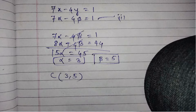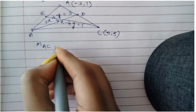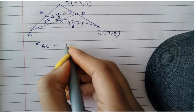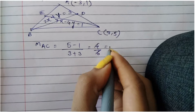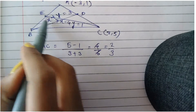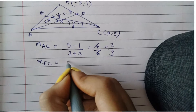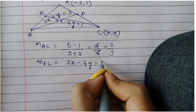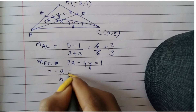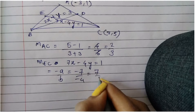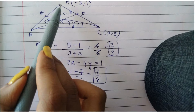We also have the coordinates of A as (-3, 1). Let us find the slope of AC using (y₂ - y₁)/(x₂ - x₁): (5 - 1)/(3 + 3) = 4/6 = 2/3. We can also find the slope of line CE, whose equation is 7x - 4y = 1. Using slope = -a/b = -7/(-4) = 7/4.